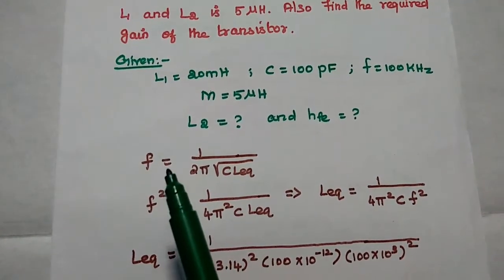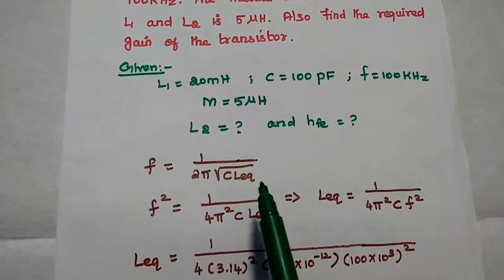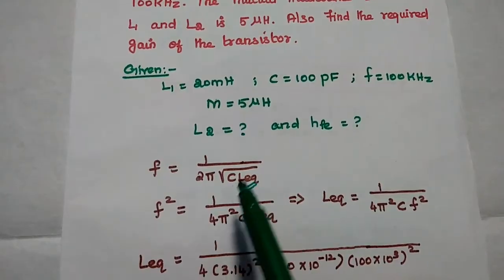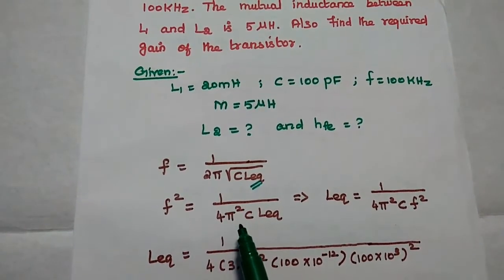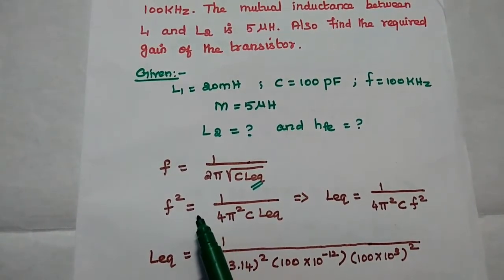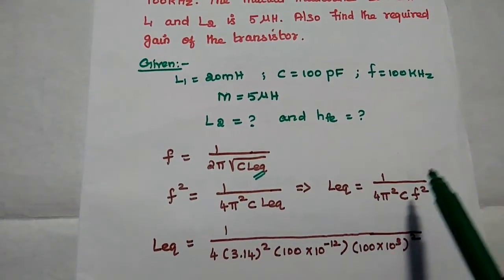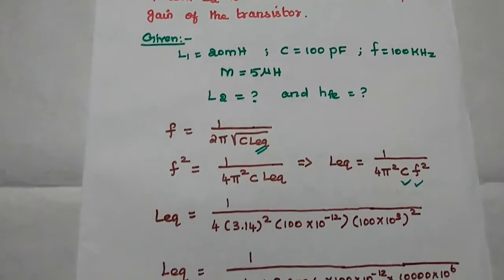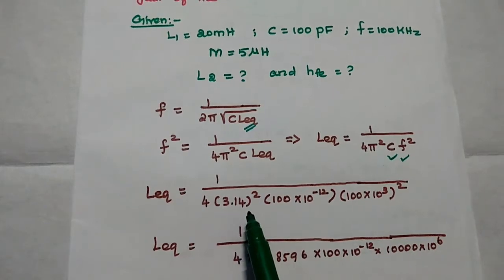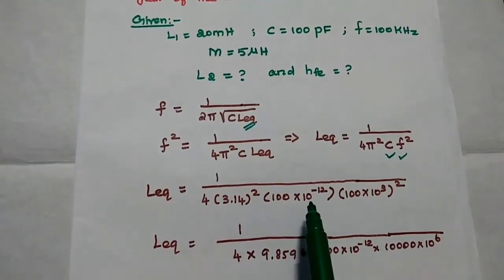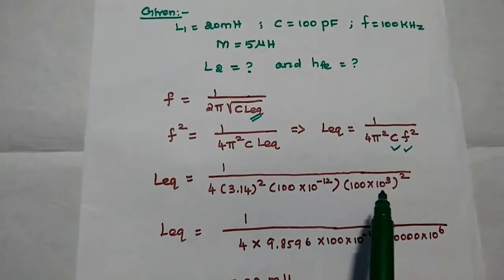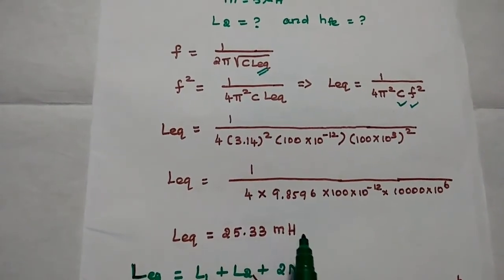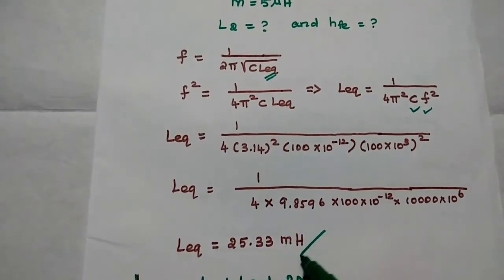Similar to the previous problem, we use the frequency formula F equal to 1 divided by 2π times the square root of C times L_equivalent. Squaring both sides: F squared equals 1 divided by 4π squared times C times L_equivalent. Rearranging, L_equivalent equals 1 divided by 4π squared times C times F squared. Substituting C = 100 into 10 to the power minus 12 and F = 100 into 10 to the power plus 3, we get L_equivalent equal to 25.33 millihenry.